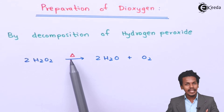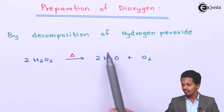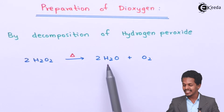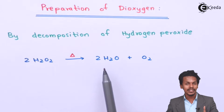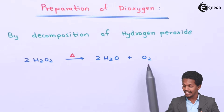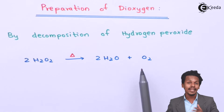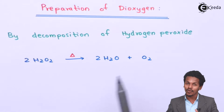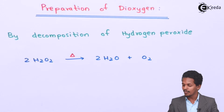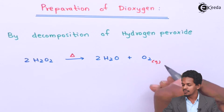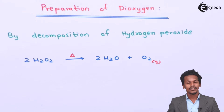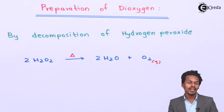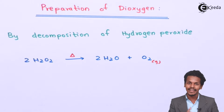Whenever we heat hydrogen peroxide, it produces H2O along with oxygen. H2O is the main component obtained, but the main thing we need is oxygen, and this is how we can obtain oxygen. This is one of the methods where we can obtain oxygen.